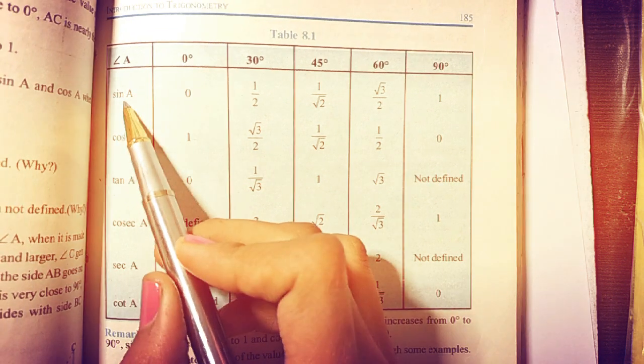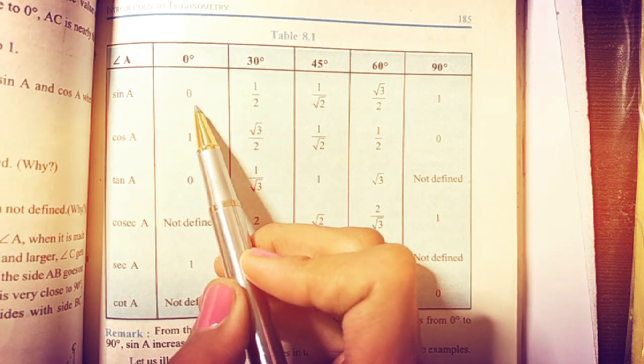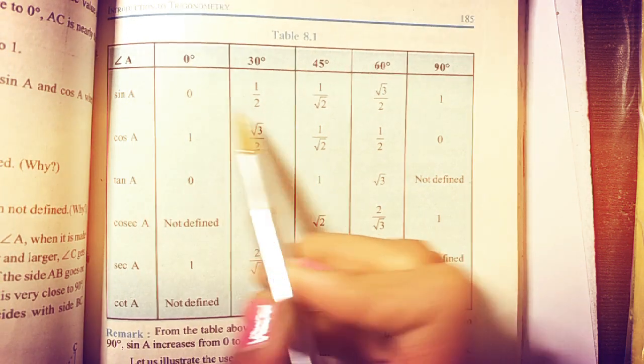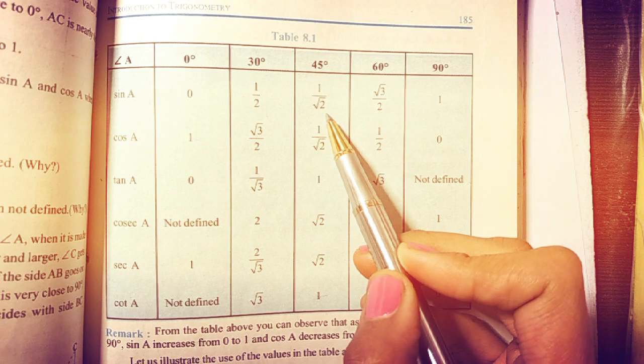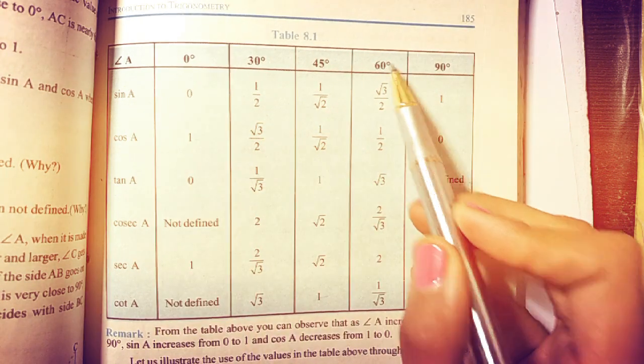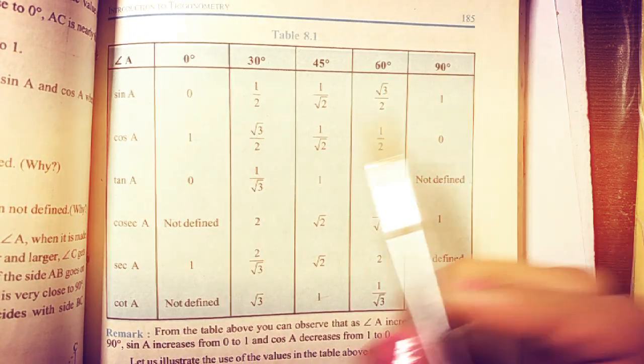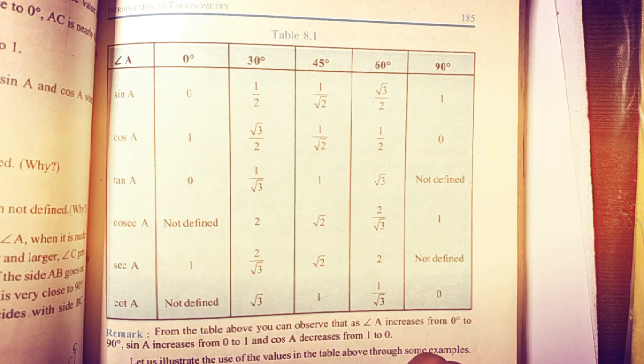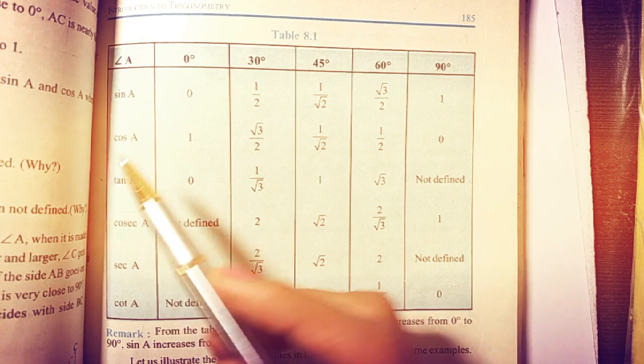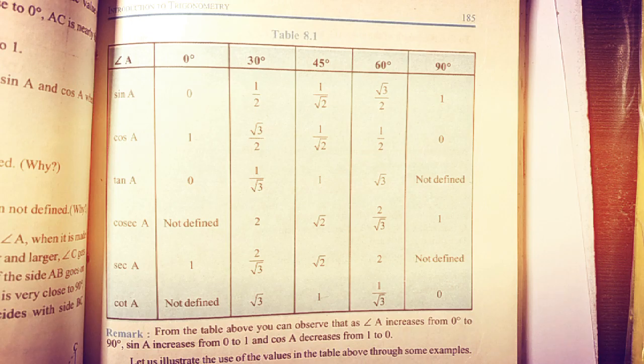We have to read this table like this: sin 0° is 0, sin 30° is 1/2, sin 45° is 1/√2, sin 60° is √3/2, and sin 90° is equal to 1. Similarly the rest of the ratios you have to remember. Cos 0° is 1, and like that.